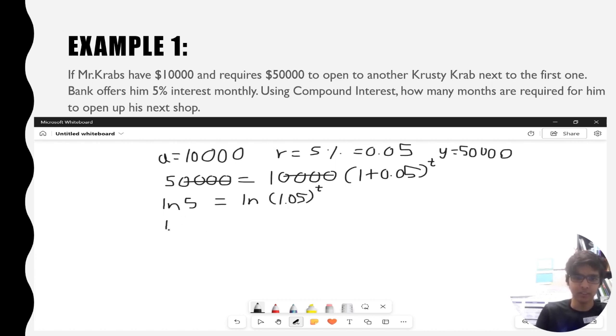Using the properties, I'll get natural log of 5 equals t natural log of 1.05. Finally, I can divide by natural log of 1.05 on both sides and get natural log of 5 over natural log of 1.05.